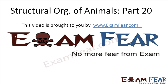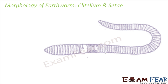This video on structural organization of animals part 20 is brought to you by ExamFear.com. We are only talking about features which can be seen from outside because right now we are discussing only about the morphology and not anatomy. So we are not going to talk about anything located inside — we are only going to talk about the external structure.